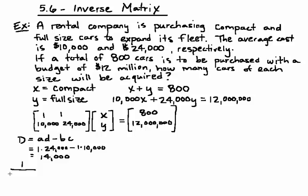So our inverse matrix is going to be 1 over 14,000 times the matrix. Remember we are switching A and D and making B and C negative. That's 24,000, negative 1, negative 10,000, and 1.